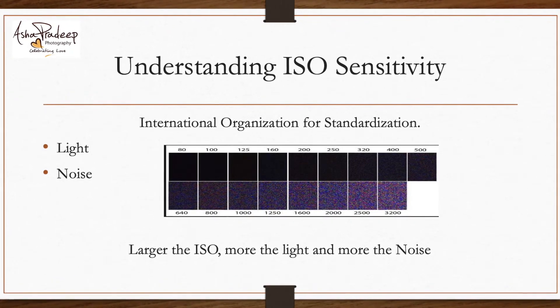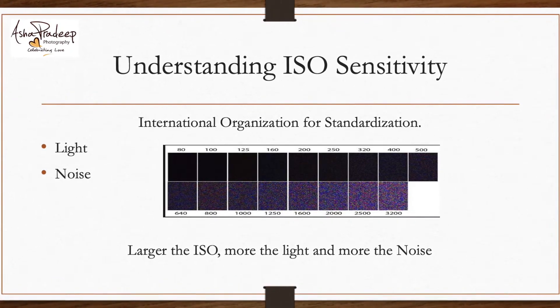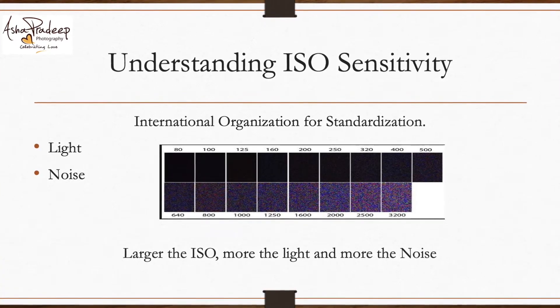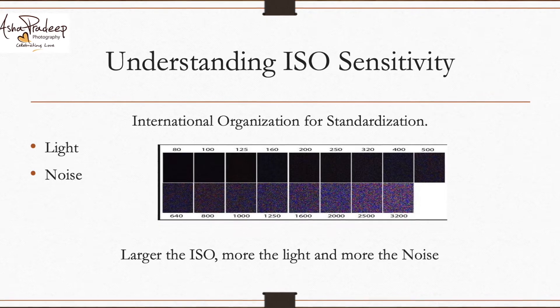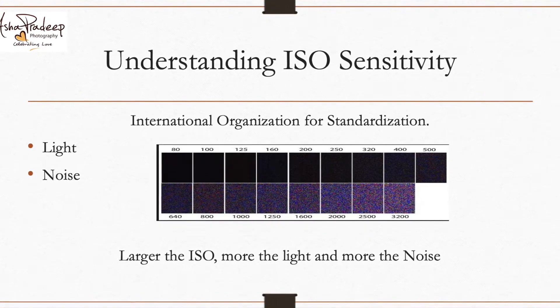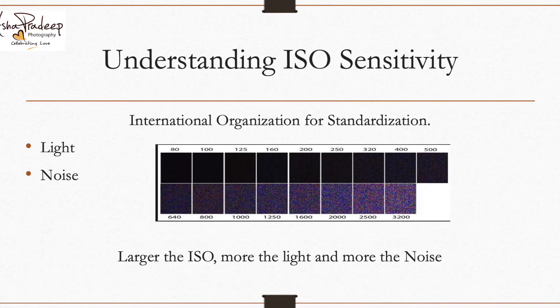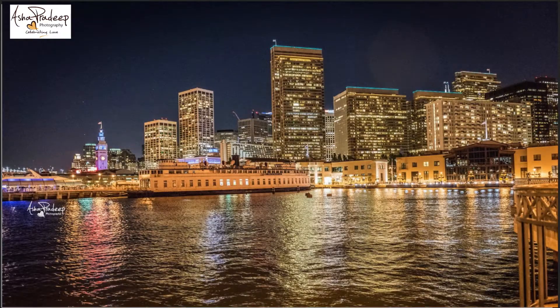The larger the ISO, the larger the noise. For example, if you are clicking a photo at ISO 3200, 4000, or more than that, you can start already seeing grain in your photos. The grain or the dots that you can see in the darker areas of the photos is nothing but the noise.